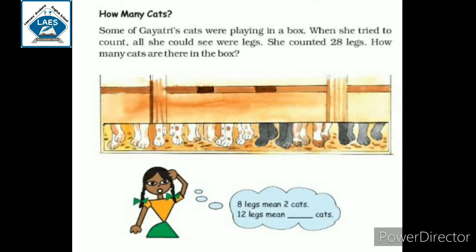Hello dear students, welcome back. In the previous video, we understood how a multiplication table is formed using two numbers. Now today we will continue with this chapter, chapter number 11, page number 123. How many cats? The question is: how many cats? Ketani cats hain?